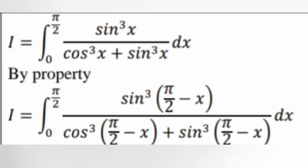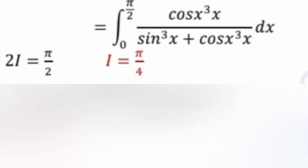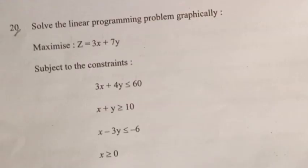Question 19.2: Evaluate ∫₀^(π/2) sin³x / (sin³x + cos³x) dx. Using the property: I = ∫₀^(π/2) cos³x / (sin³x + cos³x) dx. Adding: 2I = π/2, so I = π/4.